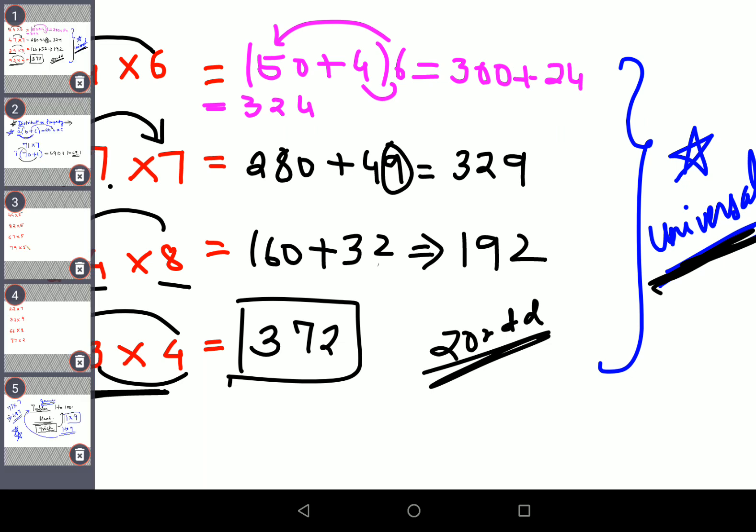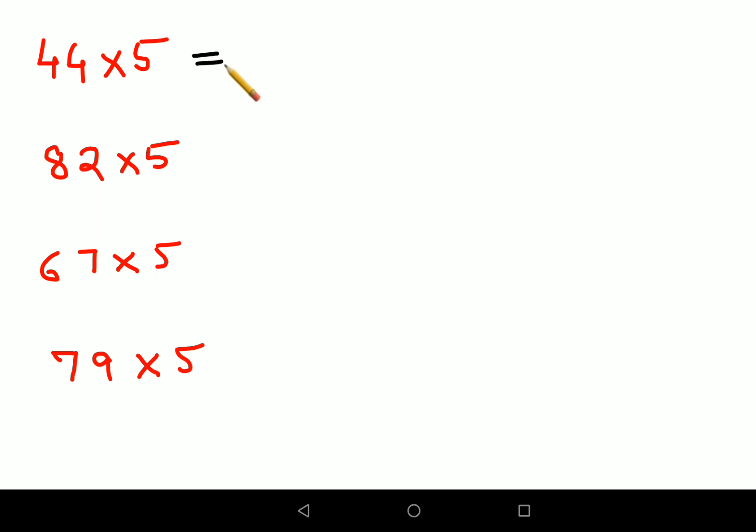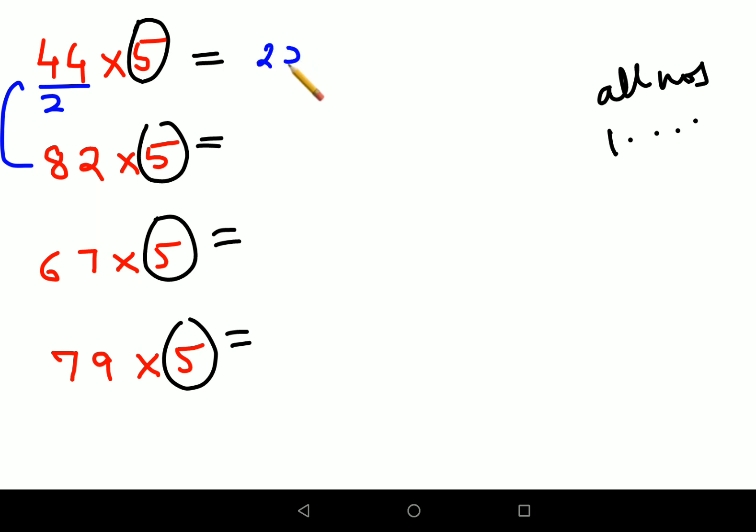Now coming back, like I said there are many tricks. Now whenever you have any number from 1 to 100 getting multiplied by 5, actually students, this trick will work for all numbers not only from 1 to 100, it will work from 1 to infinity. So here what will happen is first we will divide the number by 2. So both of these are even numbers, so division is very easy. So 44 divided by 2 is 22 and just add a 0. Here you divide by 2, you get 41 and you add a 0.